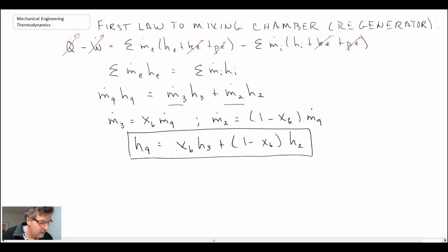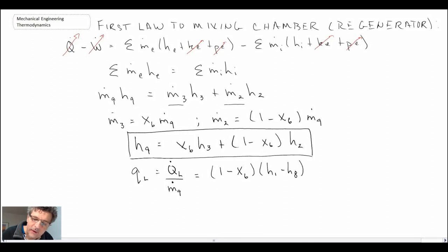Other things that we would do we would want to be able to get the coefficient of performance is we would look at the low temperature heat transfer coming from our low temperature source whatever we're trying to cool, and then expressing that in terms of mass flow rate. And we have to do this because we do not have a hundred percent of the mass flow rate going through the evaporator.